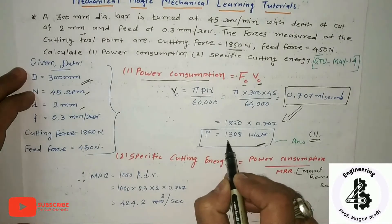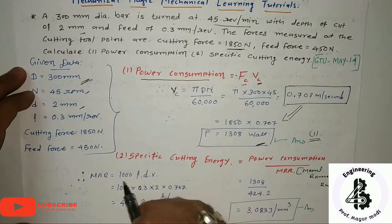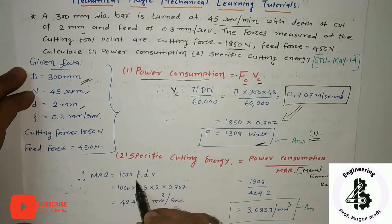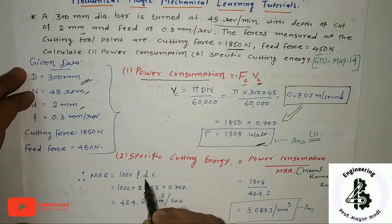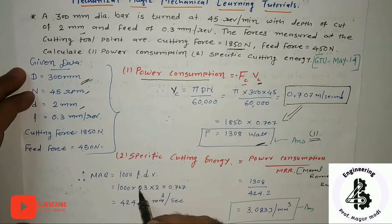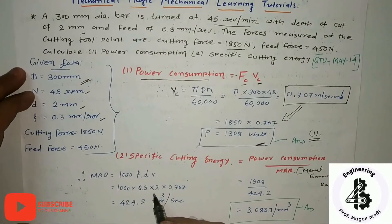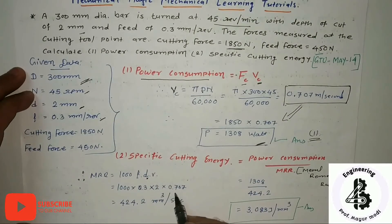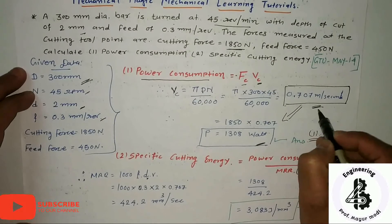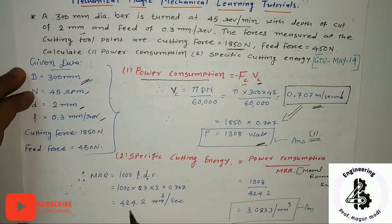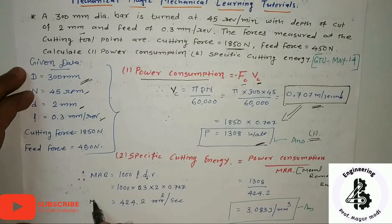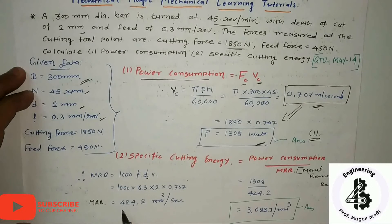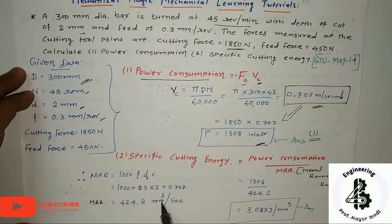The MRR equation is: MRR = 1000 × feed × depth of cut × cutting velocity. Substituting feed = 0.3 mm/rev, depth of cut = 2 mm, and Vc = 0.707 m/s, we calculate the metal removal rate to be approximately 424.2 mm³ per second.